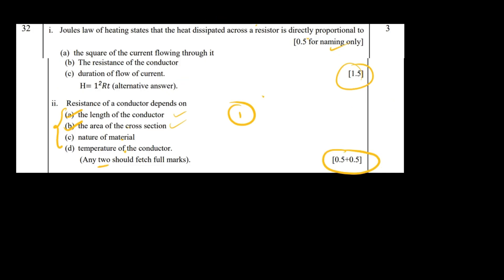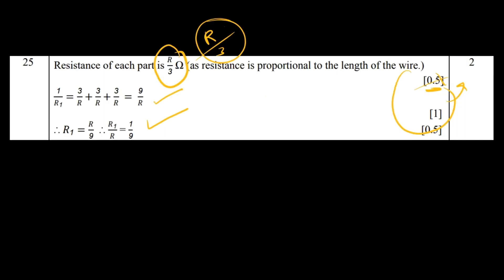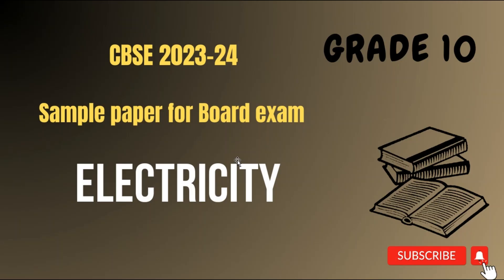So as you've seen, one question is theory-based, two are numerical-based - three questions total from this chapter, which is to be expected for the board exam. Prepare accordingly with more weightage on numericals, and just one theory question, which I'm pretty sure will be Ohm's law because that's another law in this chapter. Thank you so much for listening to my video. I'll be coming up with the next chapter, which is magnetic effects of electric current. Thank you and until then, bye.